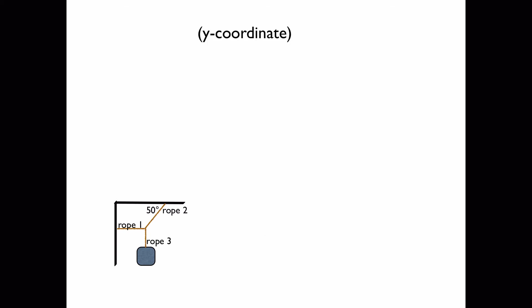And now we'll work on the y coordinate. Because rope 1 is in the horizontal direction, its y component is zero. The y component of force 2 is equal to the tension times the sine of the angle. And the y component of force 3 is equal to the weight of the block, mg.